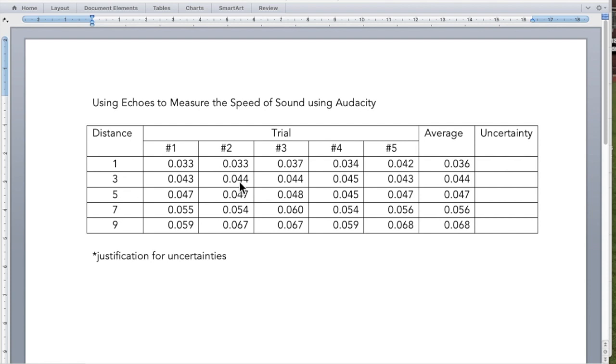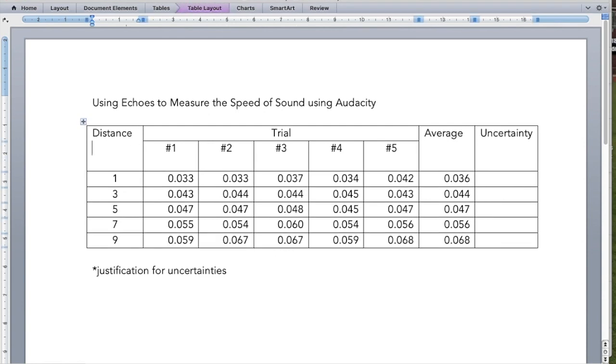One of the things that my table is missing right now is I don't have any units. So let me go ahead and put them in here. Distance measured in meters. This should be time, trial, number. That's going to be measured in seconds. So my average measured in seconds.